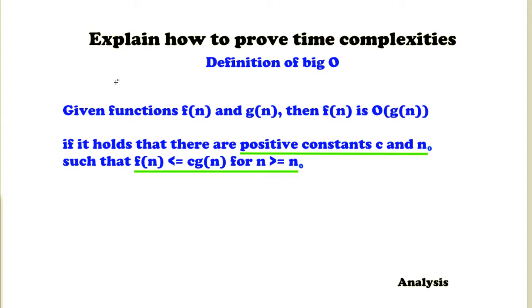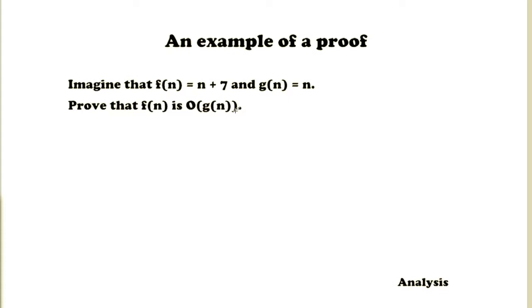This might sound a little abstract for now but let's just directly start with an example so that it becomes clear hopefully. So this is an example. Imagine that f(n) is equal to n plus 7 and g(n) is n. Now please prove that f(n) is big O of g(n).